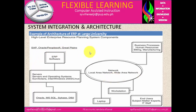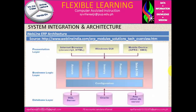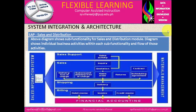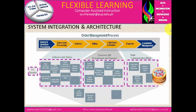We have the example of architecture of ERP at a large university showing the high-level enterprise resource planning system components, identifying SAP, Oracle, and Microsoft. We also have the webline ERP architecture from the business logic layer with a layered architecture. We have the SAP sales and distribution module — the diagram shows sub-functionality for sales and distribution, including individual business activities within each sub-functionality, the flow of these activities, and the order management process. Those are examples of the architecture.